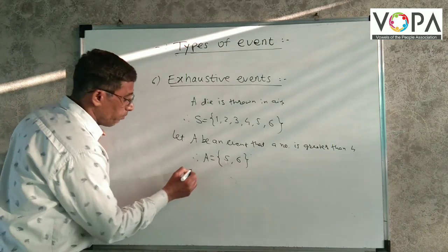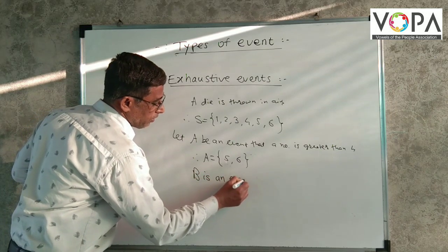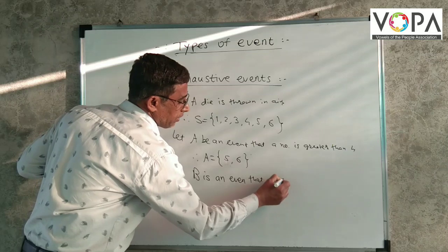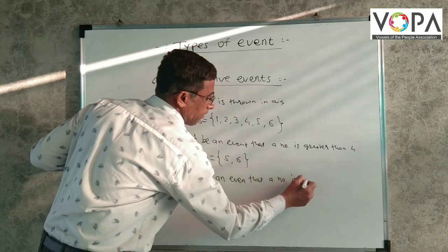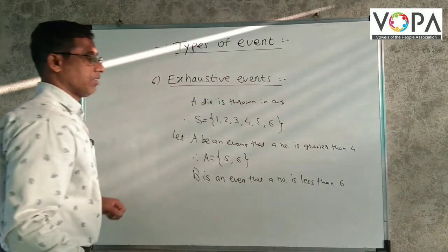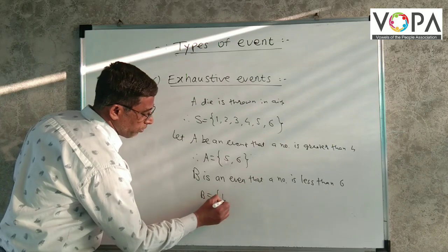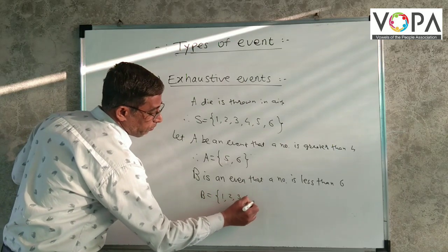Also, B is an event that a number is less than 6. Then, B is equal to 1, 2, 3, 4, 5.